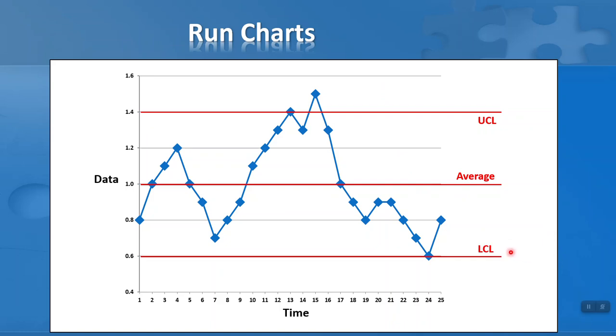We also have a lower control limit (LCL), and we don't want any values below that. The LCL is also set at three standard deviations, this time below the mean. For natural variation, we want everything to fall within the UCL and the LCL, and to be as close as possible to the average.